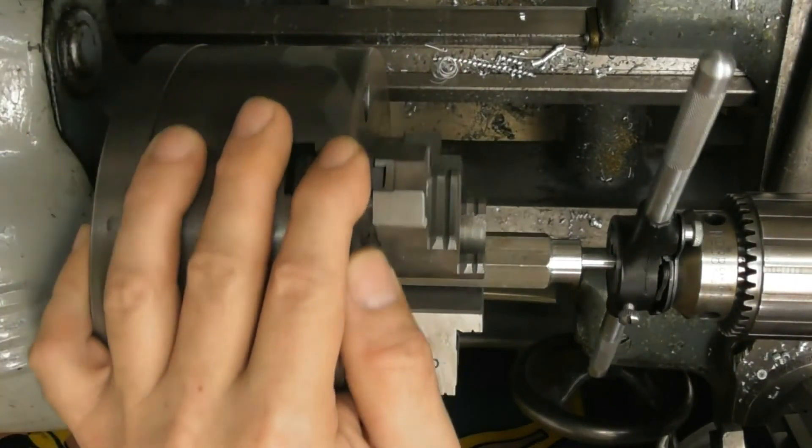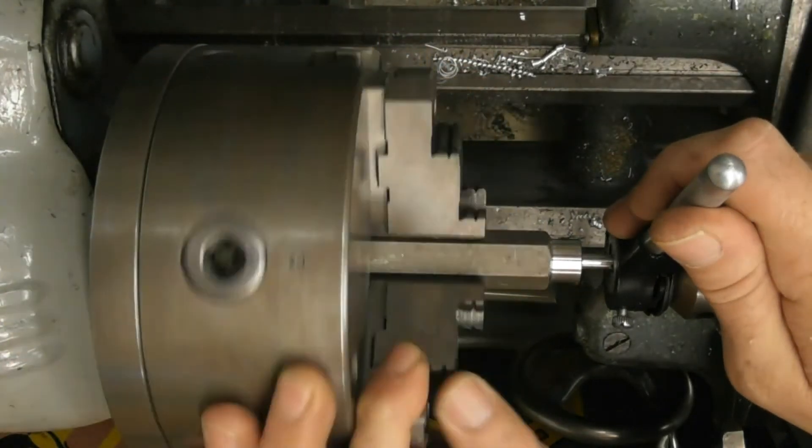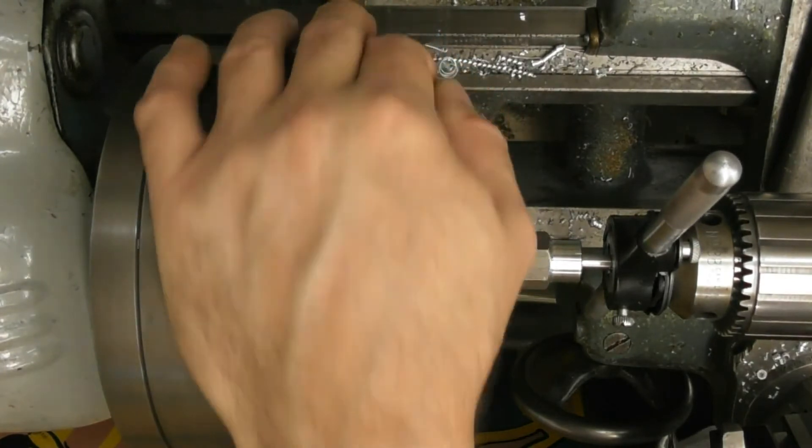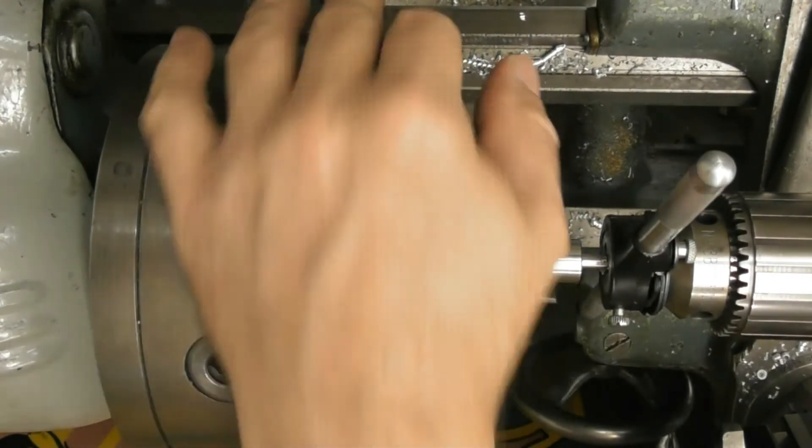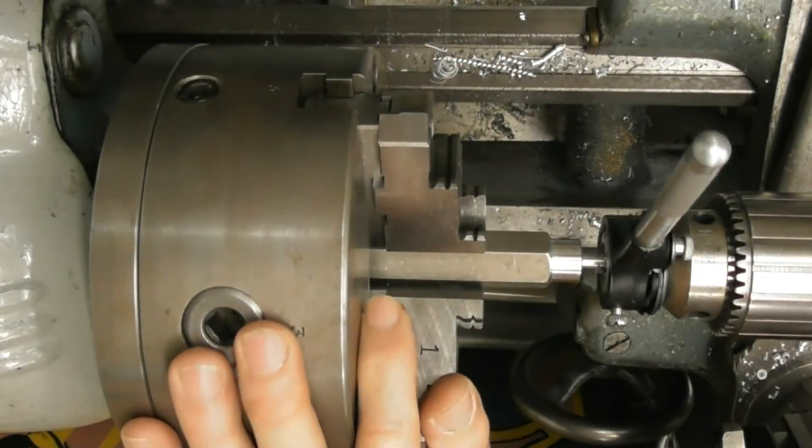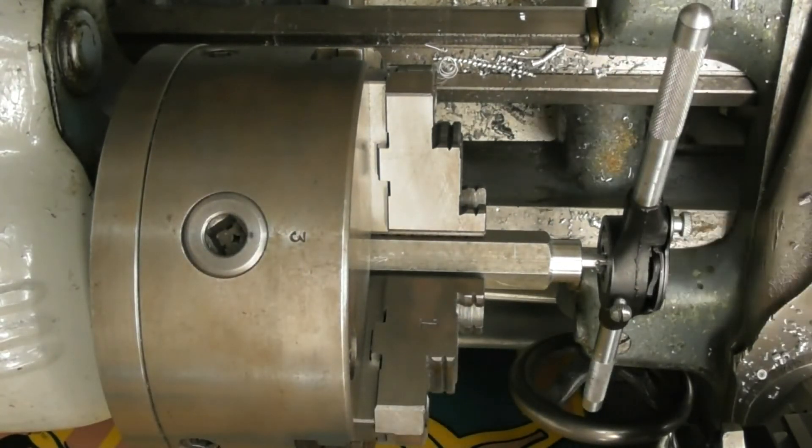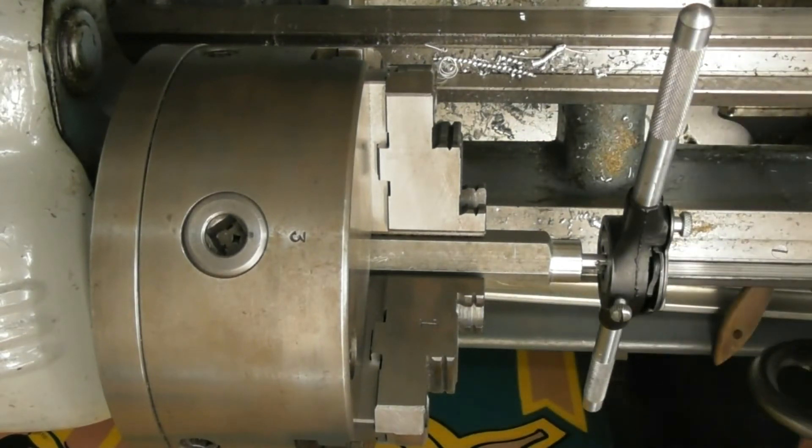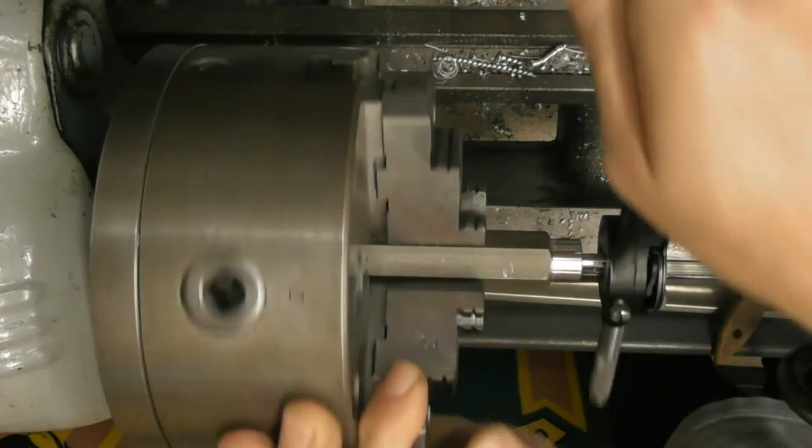A little bit of pressure, get this started, and I'm chasing with the tail stock as I bring this up until I get a bit threaded. It's looking pretty good. At this point I can actually remove my tail stock, get my carriage out of the way, and I will finish this off by hand.